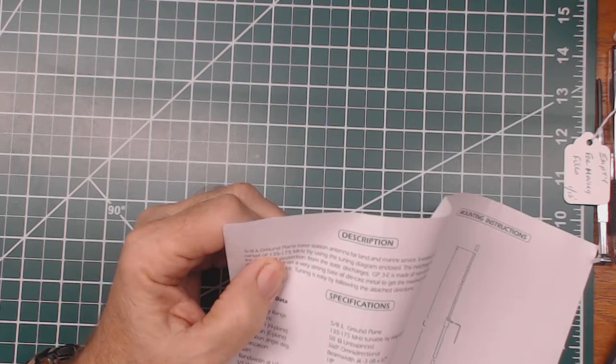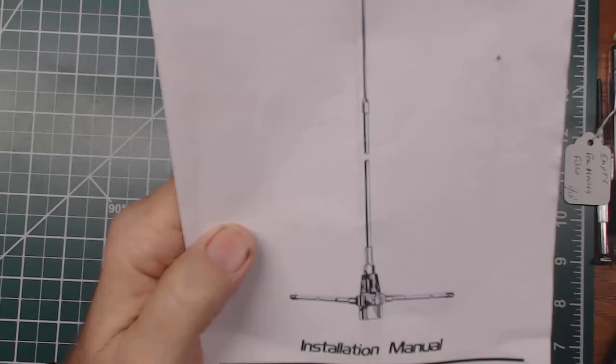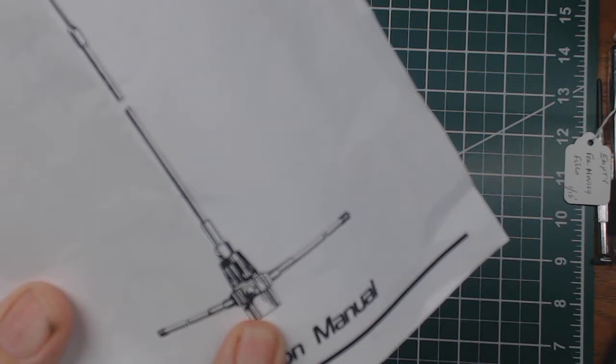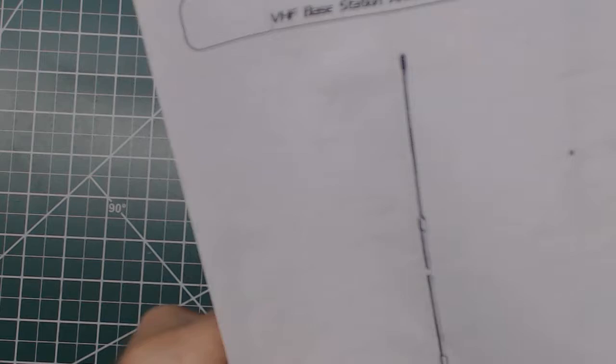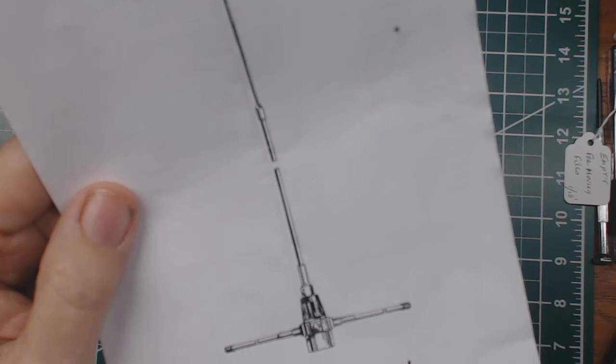It's a ground plane antenna. Now the reason it's called ground plane - these are the radials. I don't know if they showed up very good in my previous video. These are the radials that act as a ground. And the base of this is connected to your pole, your steel pole, which then is grounded. And that brings the ground for this antenna all the way up to the top of your pole and at the base of this vertical piece.